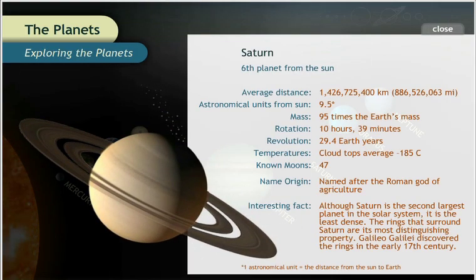Saturn, the ringed planet, is the sixth planet from the Sun. It is the second largest planet and has a mass that is 95 times greater than the mass of Earth.